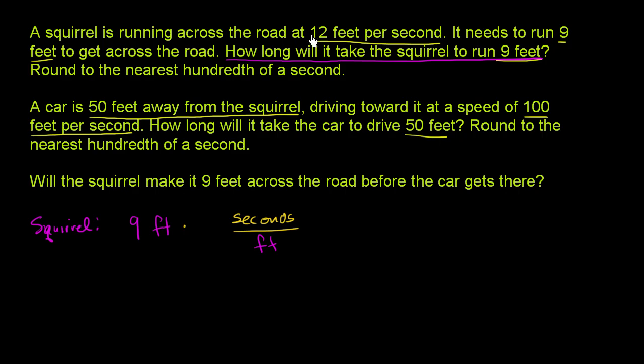Right over here we're told that the squirrel can run at 12 feet per second. But we want seconds per foot. So the squirrel, every second, so they go 12 feet per second. Then we could also say 1 second per every 12 feet. So let's write it that way. So it's essentially the reciprocal of this, because the units are the reciprocal of this. So it's 1 second for every 12 feet.